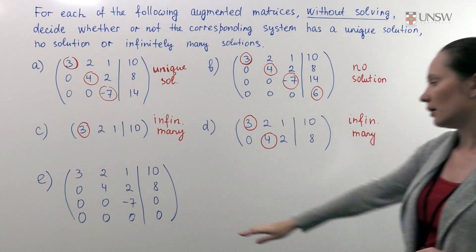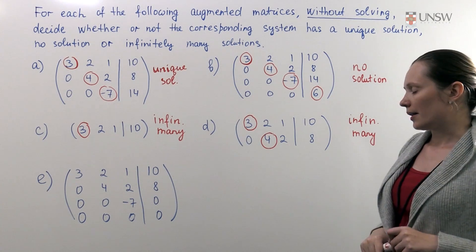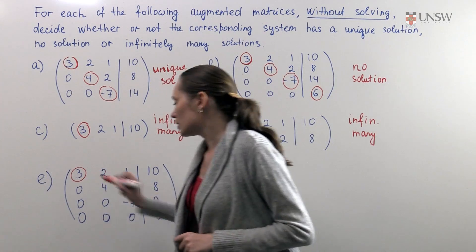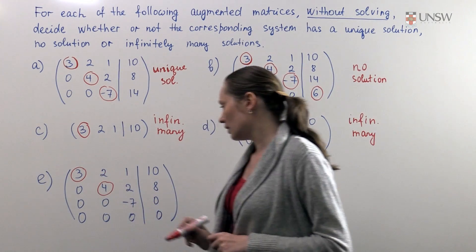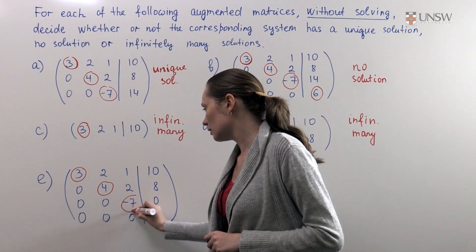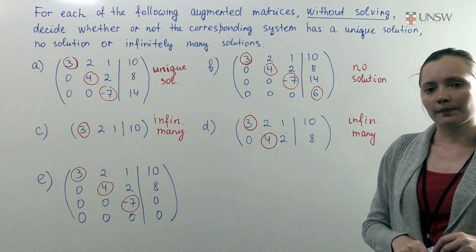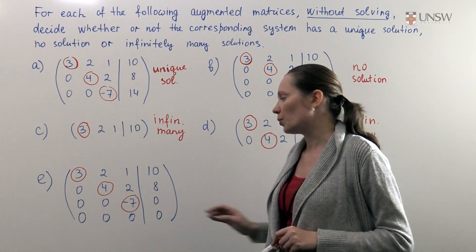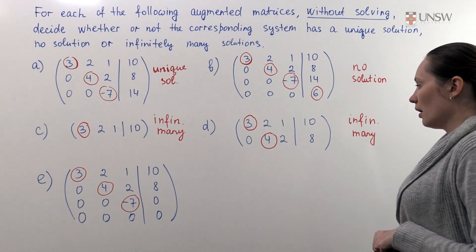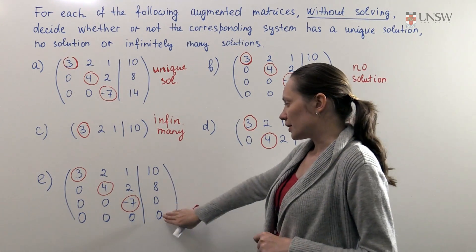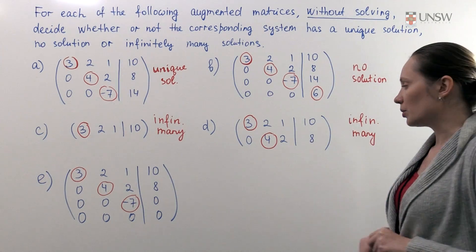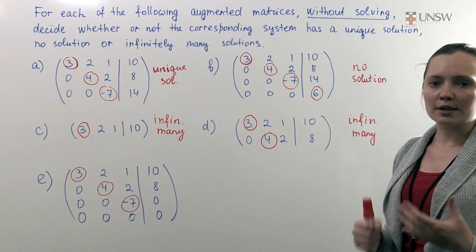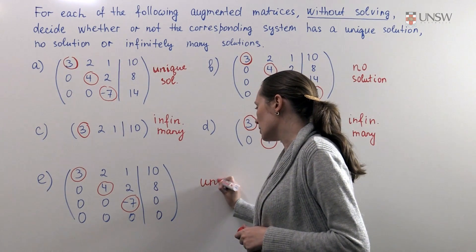Finally let's look at the matrix from part E. Again we determine all leading columns. In this case we have three leading columns and one non-leading column. Since the constant vector column is a non-leading column, we look at the remaining columns. All three of those columns are leading columns. Therefore we conclude that there is a unique solution.